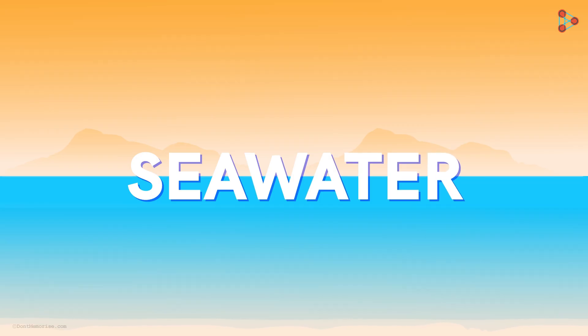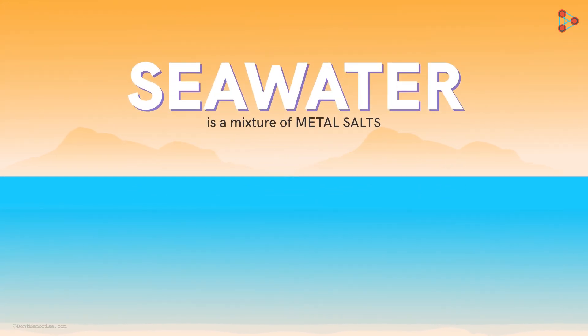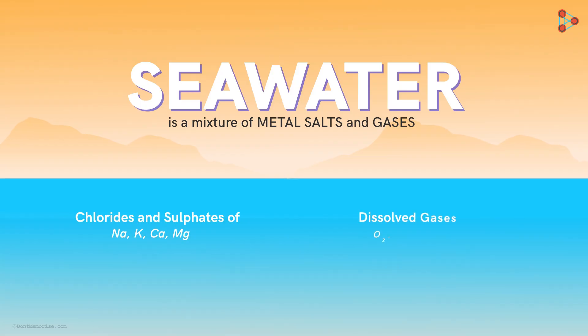Seawater is a mixture of many things. It is a mixture of metal salts like chlorides and sulphates of sodium, potassium, calcium and magnesium, and gases like oxygen, carbon dioxide and nitrogen.